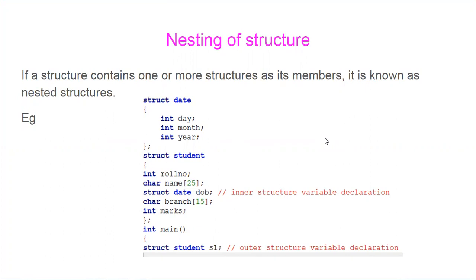What do you mean by nesting of structure? When a structure is defined as a data type within another structure, then we call it as nesting of structure. For example, here we have the structure called date which consists of day, month, and year.